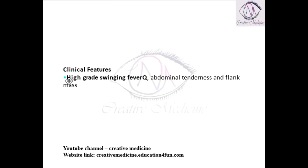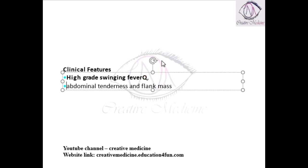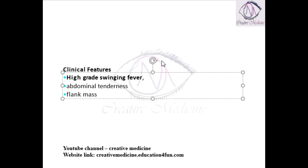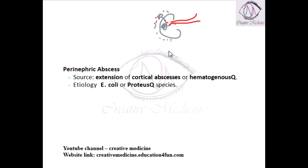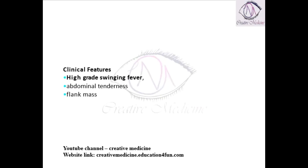A patient with perinephric abscess presents with the following features: high-grade swinging fever, abdominal tenderness, and a flank mass. Because there is pus or abscess around the kidney, this causes fever; tenderness is seen because it is an abscess; and a flank mass is also present.